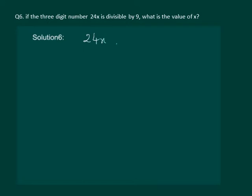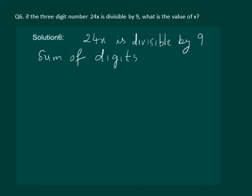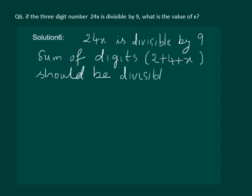Since 24x is divisible by 9 is given in the question, the sum of its digits, that is 2 plus 4 plus x, should be divisible by 9. That means 6 plus x should either be equal to 9 or 18 or 27 and so on.